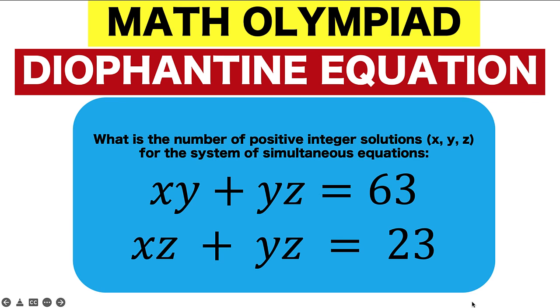What is the number of positive integer solutions x, y, z for the system of simultaneous equations below? We have xy plus yz equals 63 and xz plus yz equals 23.